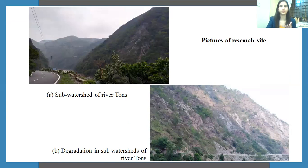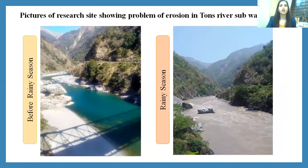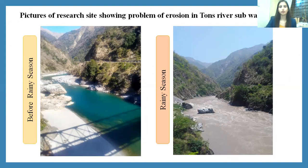These are pictures from the research site showing different kinds of land use: majorly dense forest area, agriculture, scrub area, and also some barren land along with settlement. The pictures were taken in two different seasons — one before the rainy season and one during the rainy season. We can clearly see that there is the problem of runoff and erosion in this region, which is prevalent and needs to be checked.